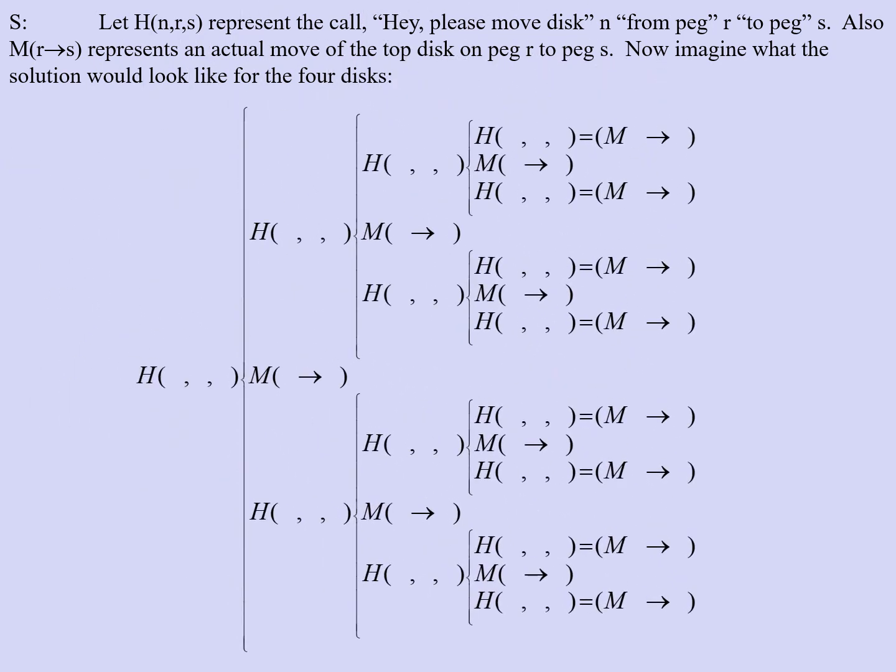So if you have your coins lined up, let's let peg 1 be the far left, peg 2 be the middle, and peg 3 be the right. Then H(4,1,3) is the call. Move the fourth disc, in this case the quarter, from peg 1 to peg 3, from the left to the right. Now clearly you cannot do that until what? Until disk 3, the nickel, has been moved off of peg 1 and is on peg 2. Then you can move what? You can move the top disc on peg 1, which is really only the quarter, to peg 3. And then you can take the nickel from peg 2 and put it on peg 3. So now the quarter has the nickel on top of it on the right.